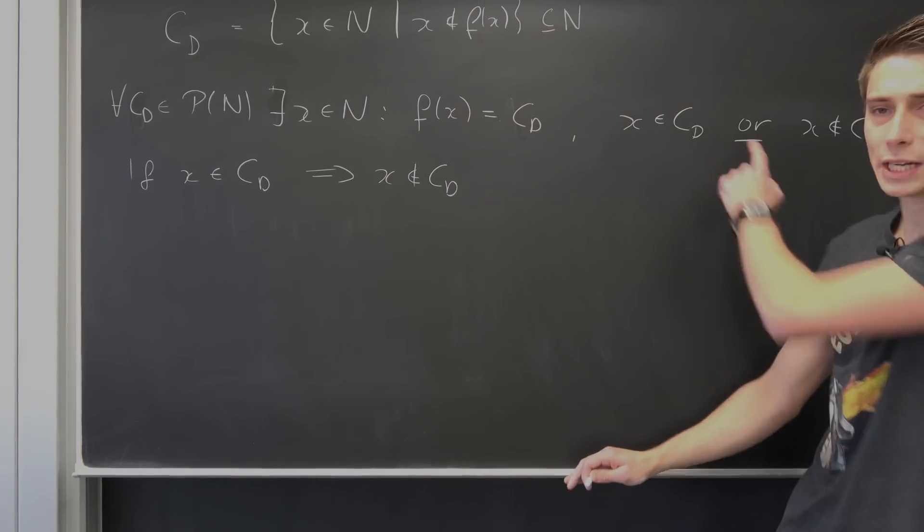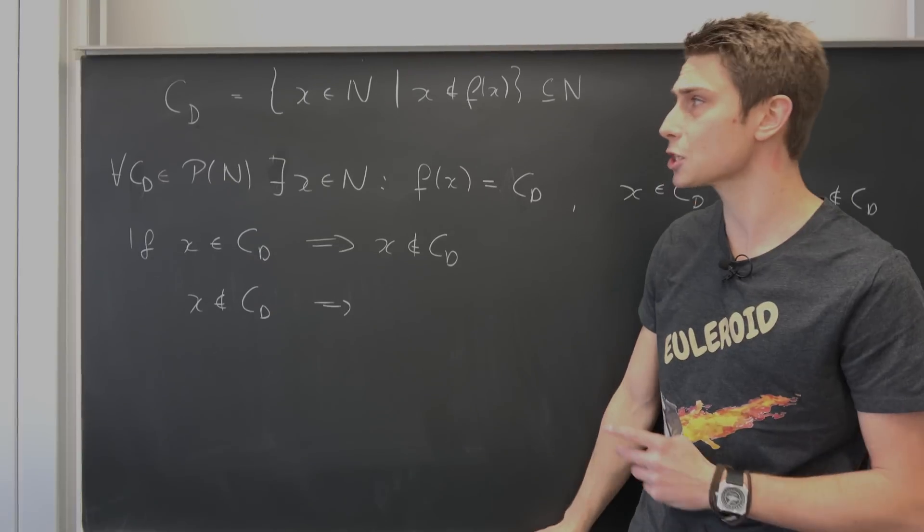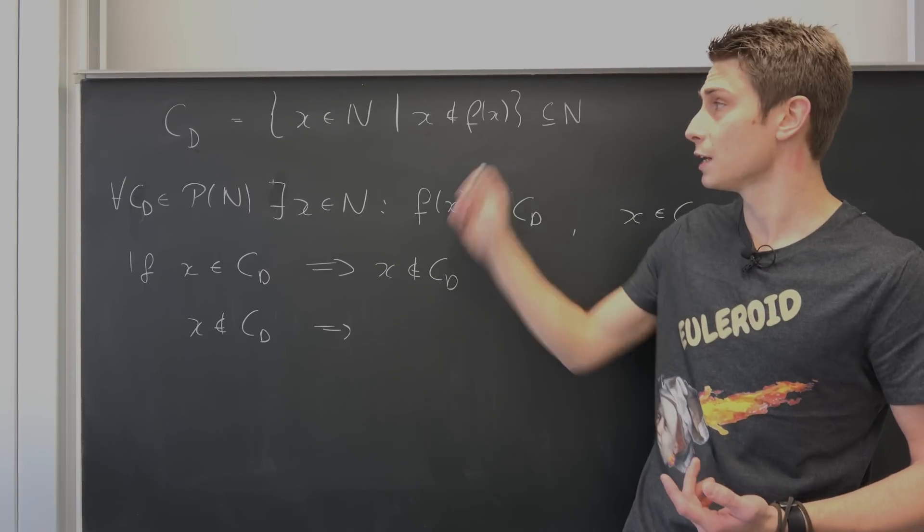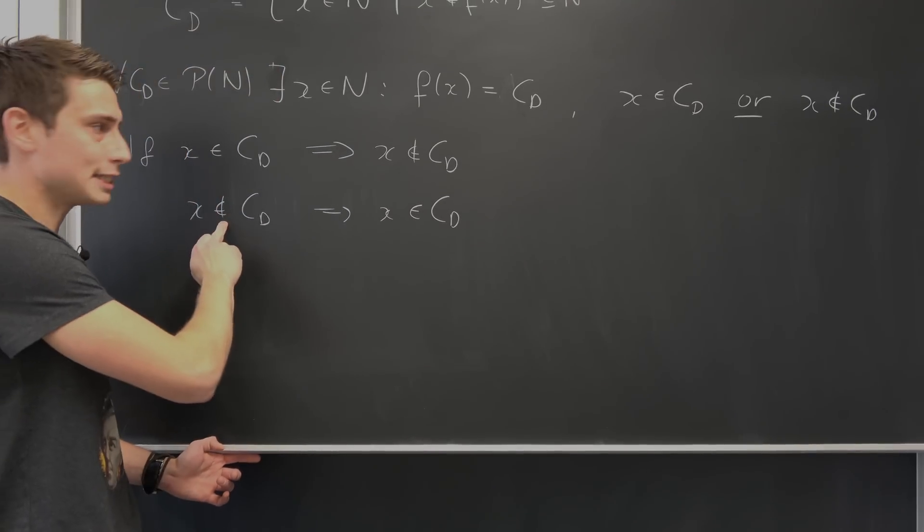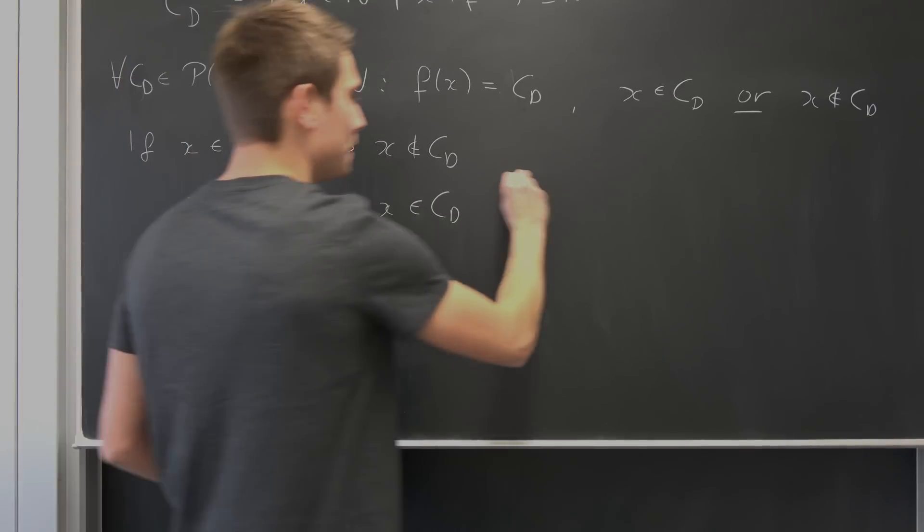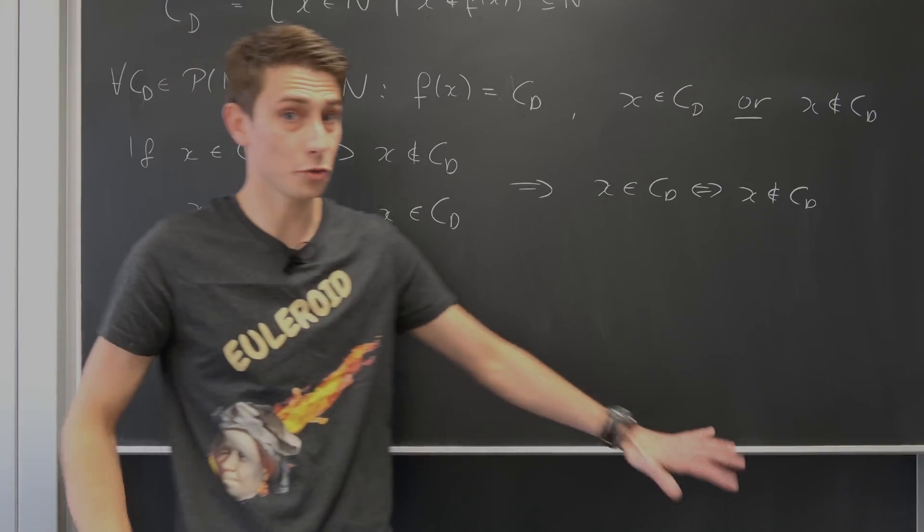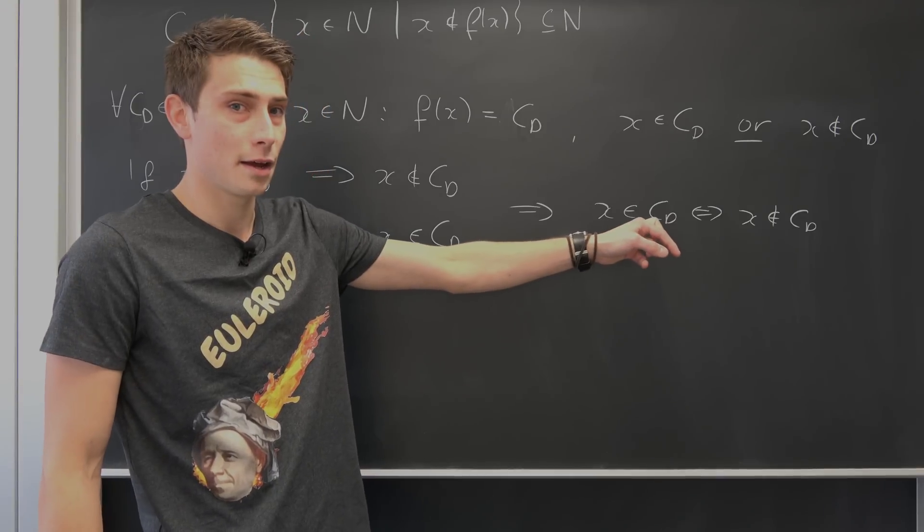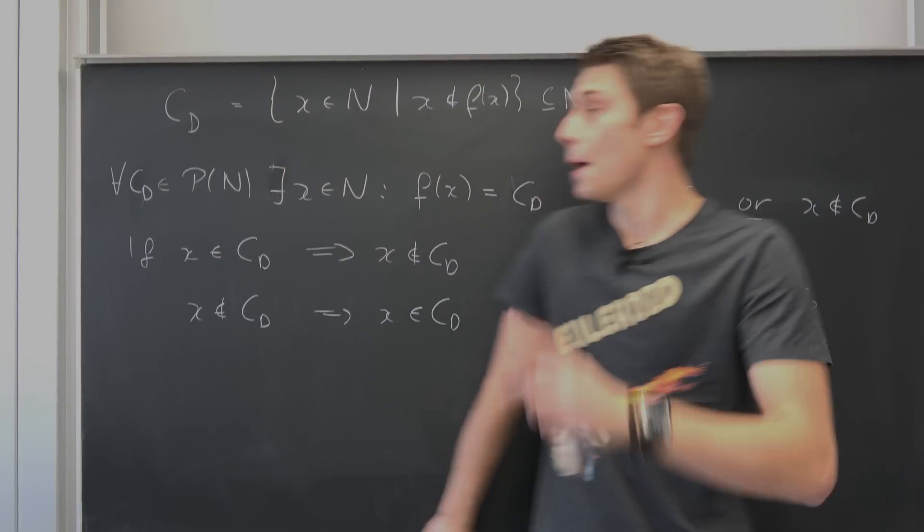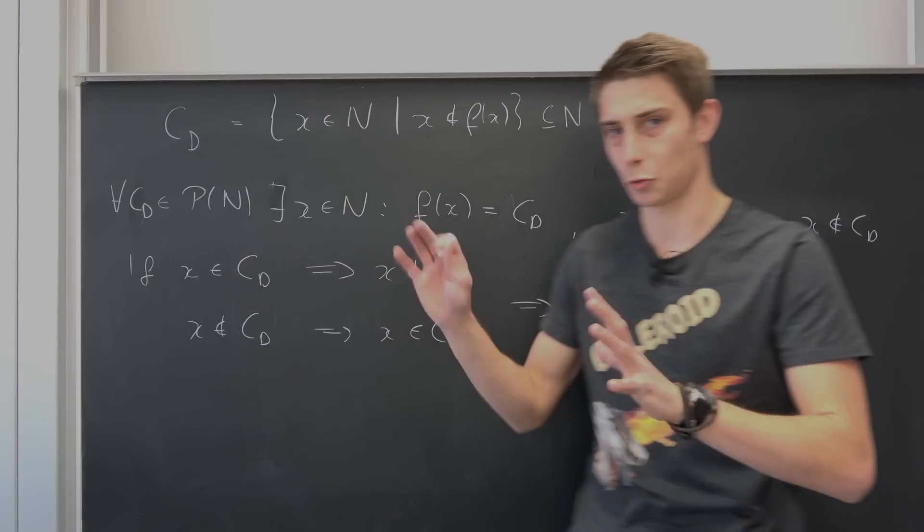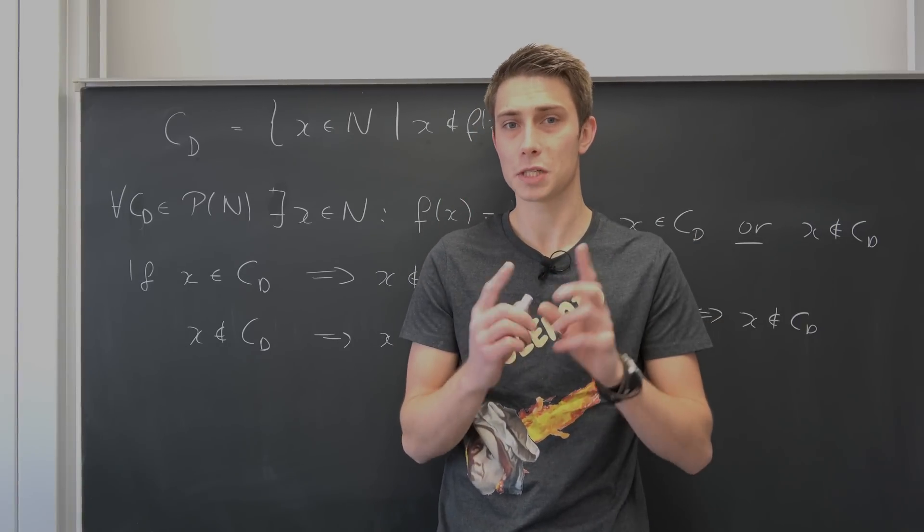But what happens if we take a look at the second part, that x is not element of CD? Well this implies if x is not in the image of f, then it's certainly element of the Cantor diagonal set because it satisfies this condition. So x is definitely element of CD. But this statement implies this statement and this statement implies this statement. Meaning overall that x is element of CD is equivalent to saying that x is not element of CD. And this is a contradiction because this states that x is element of the image and it is not element of the image. But this works against our law of the excluded middle.